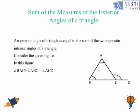Now we move ahead and we are going to learn about sum of measure of exterior angle of a triangle. So if this is a triangle and we extend this line as CD here and there is an angle formed which is angle ACD. Then an exterior angle of a triangle is equal to the sum of the two opposite interior angles of a triangle.